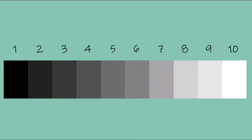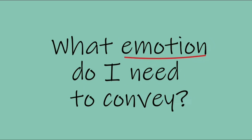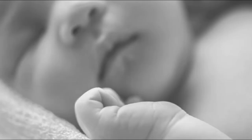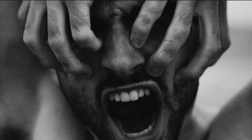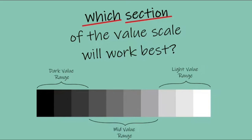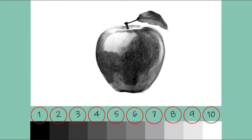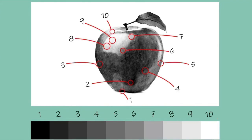Now that you understand the value scale, you need to learn how to apply this to your own art. Before you start an artwork, ask yourself: what emotion do you want to convey? Is it a soft, subtle peacefulness? Is it a dramatic, harsh emotion? Then decide whether you'd like to include the entire value range or only a certain area of it. If your goal is to make it look as natural as possible, I would recommend using the entire value scale — make sure you use all 10 values.